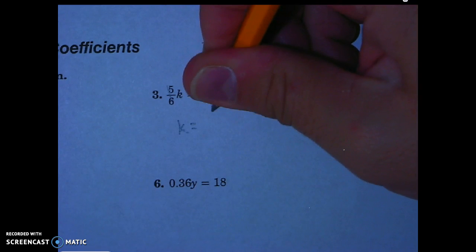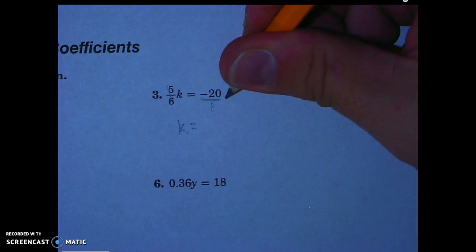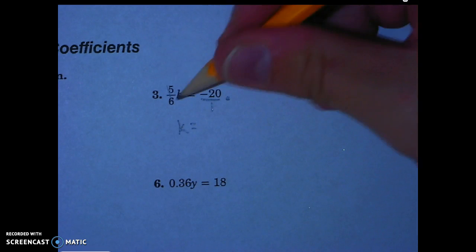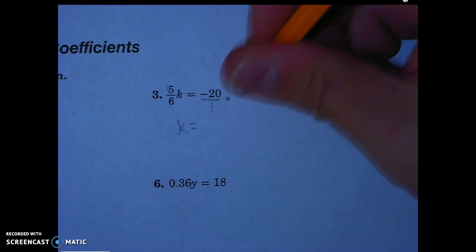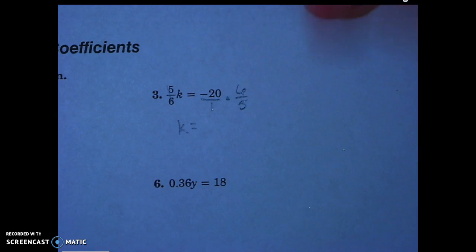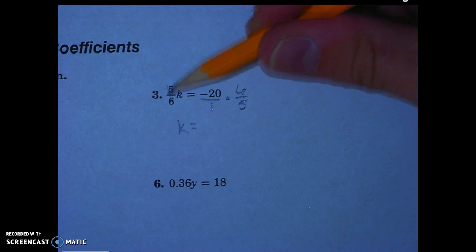For my keep, this is my keep. I'm going to change it from division to multiplication, and I'm going to flip it to 6 over 5. So this is my keep, change, flip to divide negative 20 by 5 sixths.